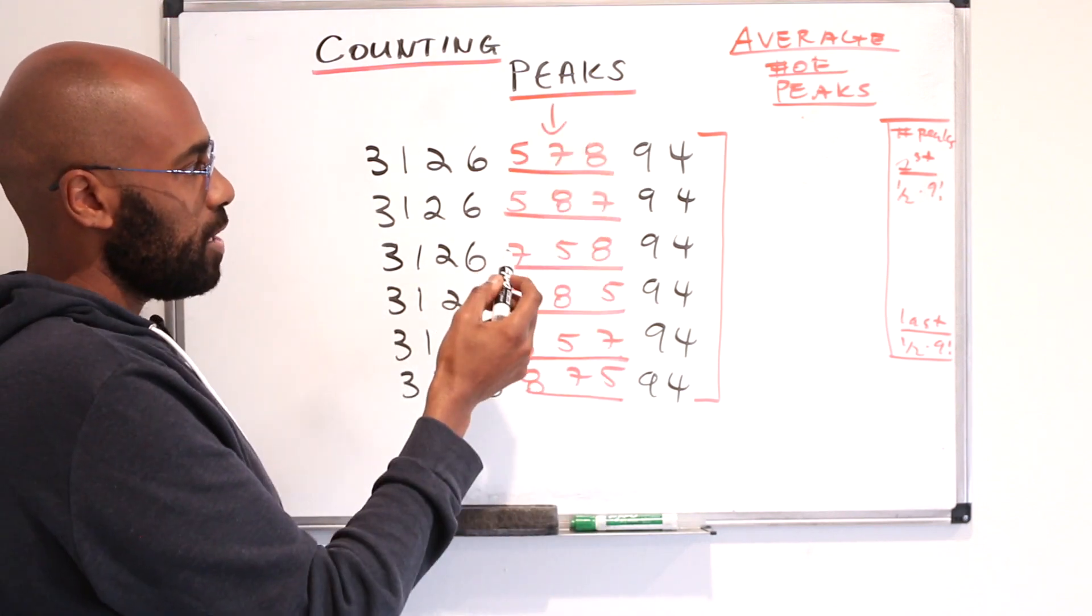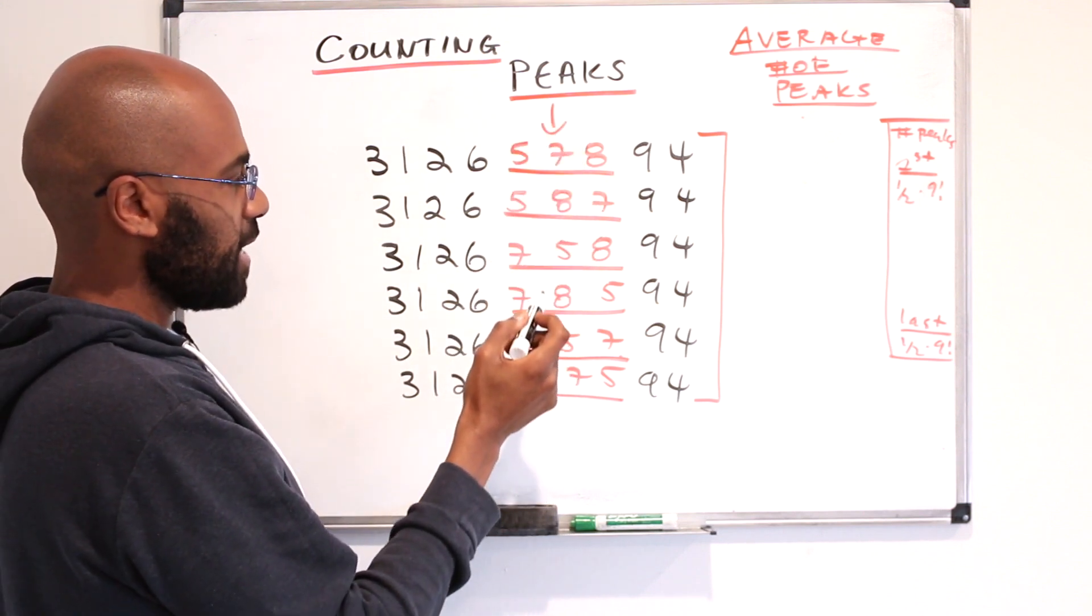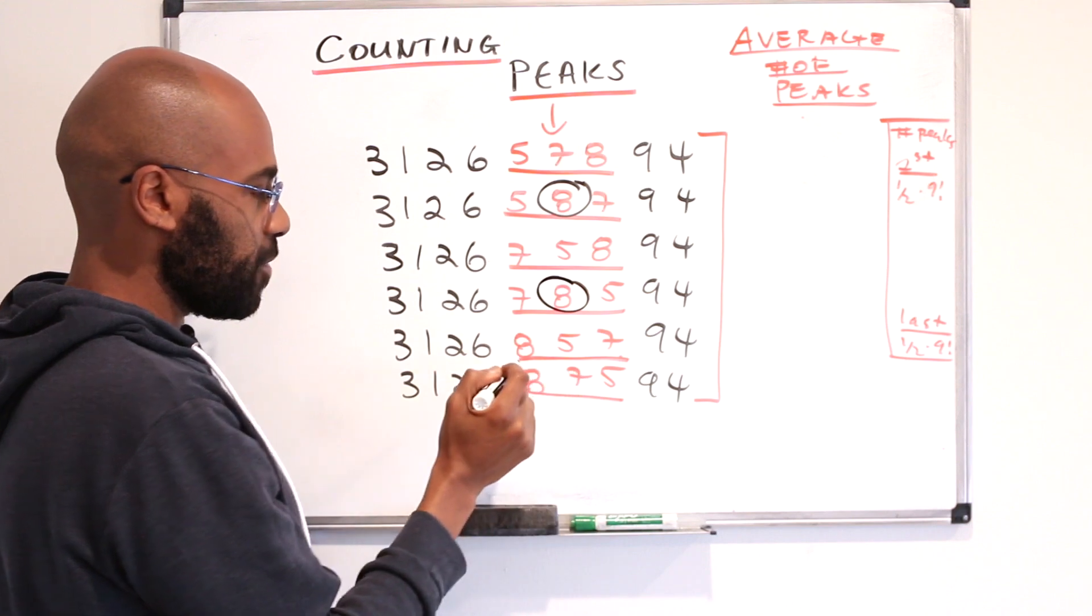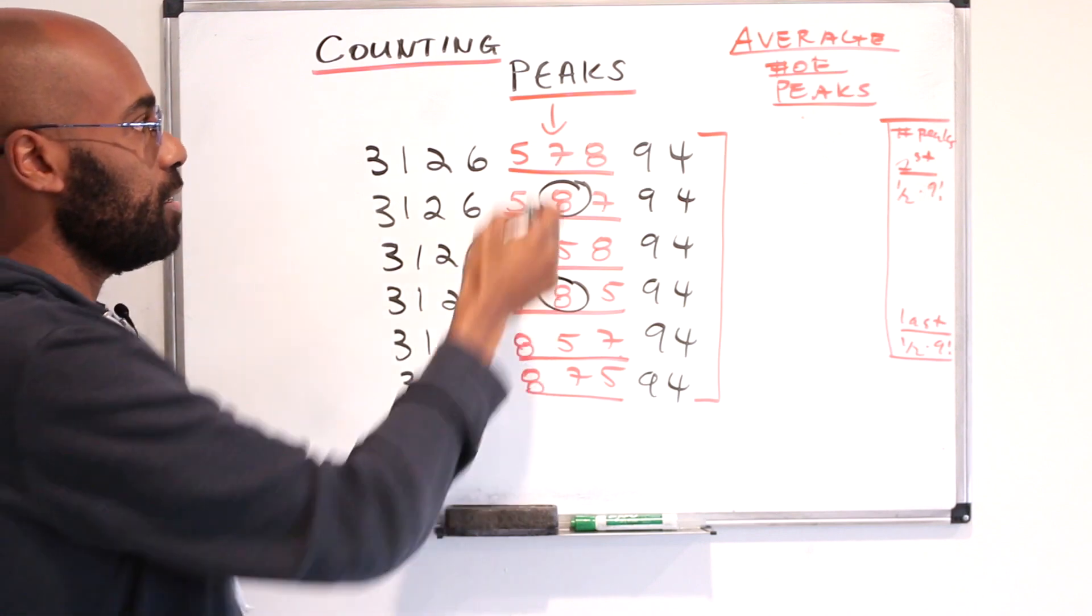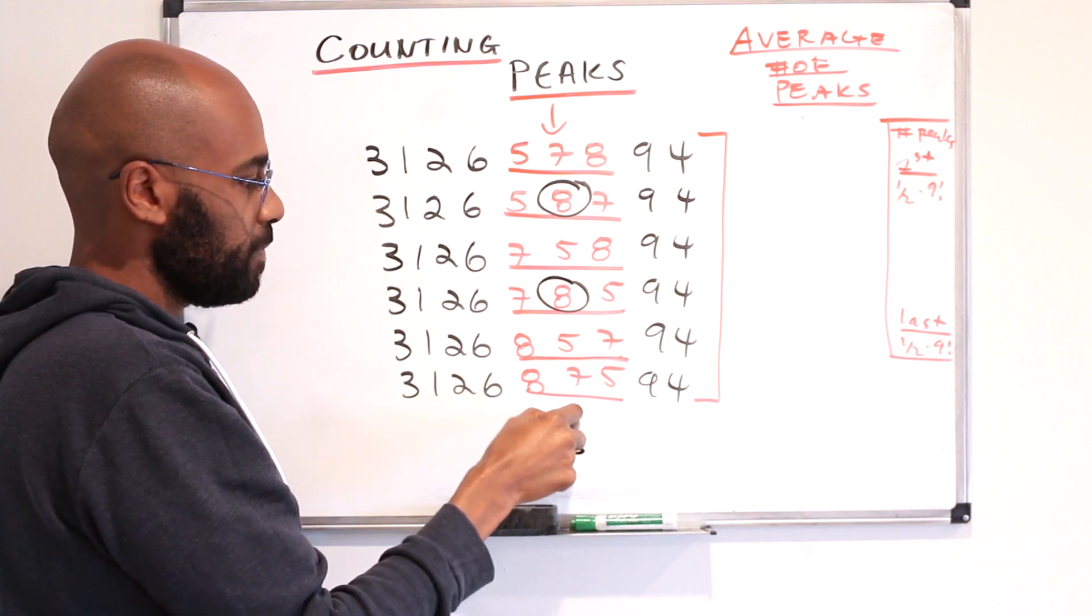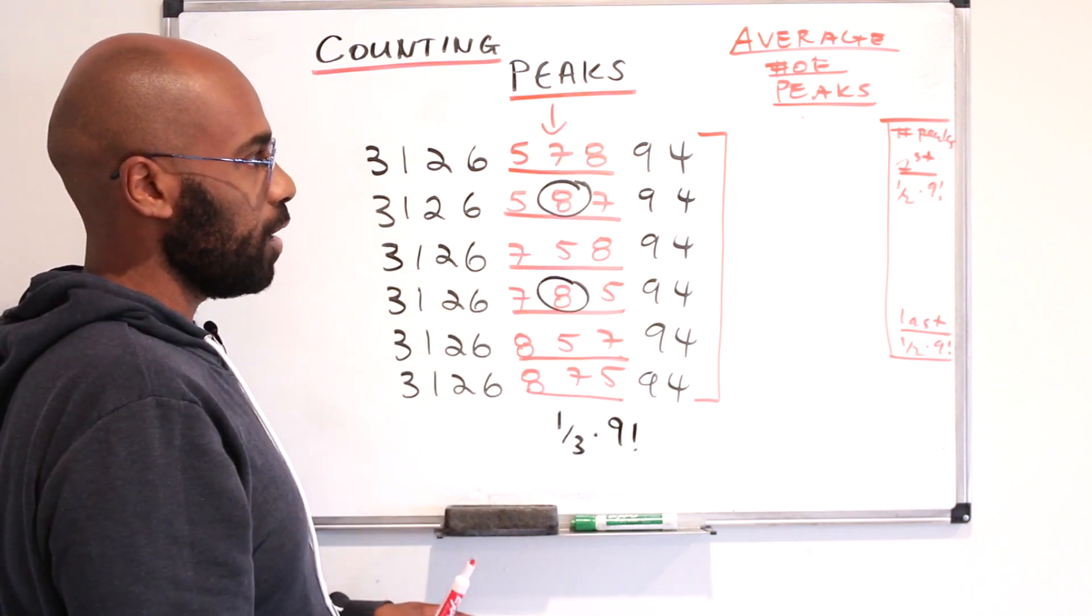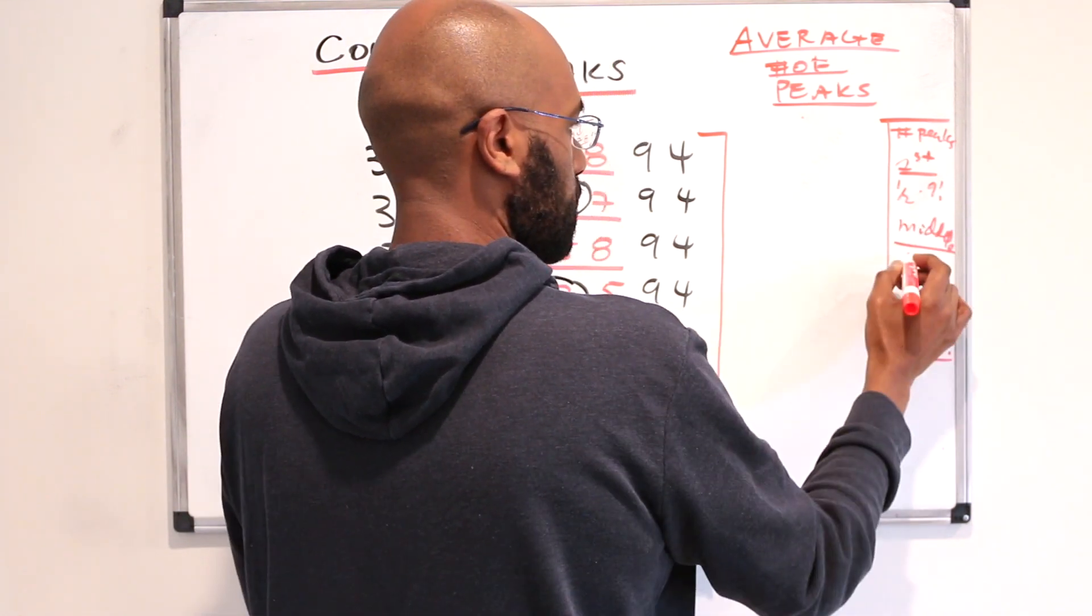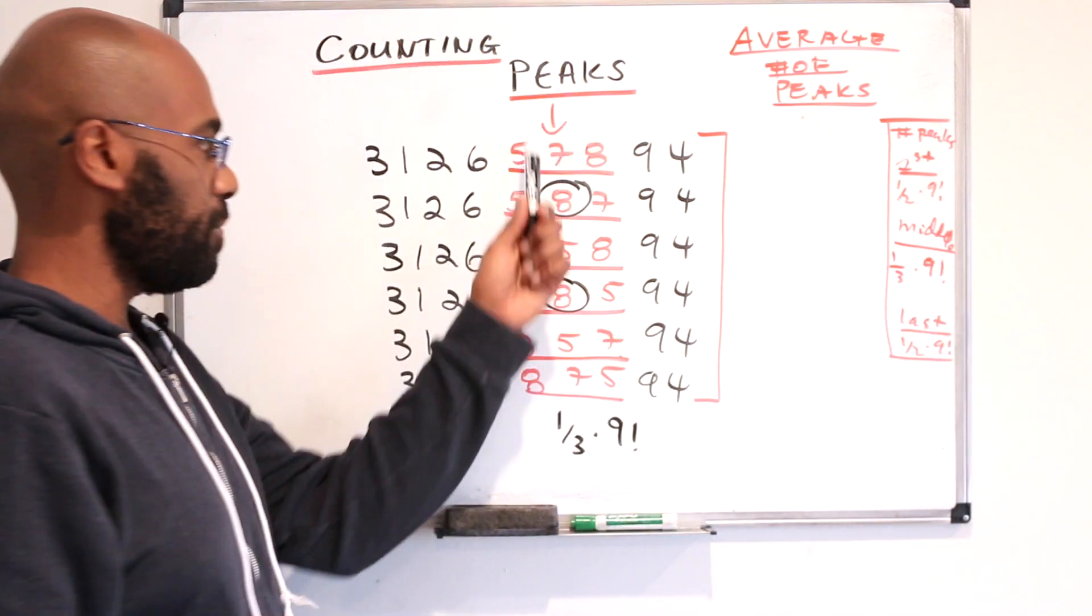So we see here that the number of times this particular column is a peak is exactly two. It happens when you pick the largest of these three numbers to be in the center. Right? So the chance of being a peak then in one of these middle columns is exactly one third of the time. So we'll have one third times nine factorial peaks in any one of these middle columns. Okay. So in the middle column, we get one third in any of the middle columns, we get one third times nine factorial many peaks.